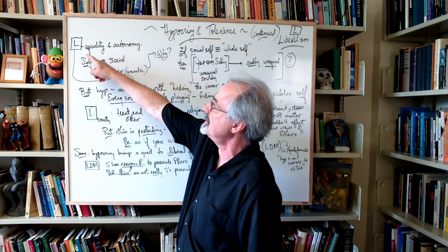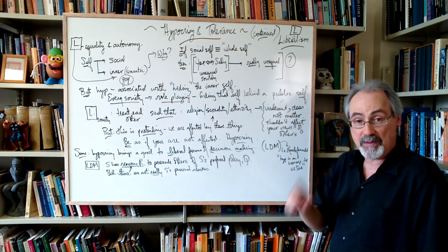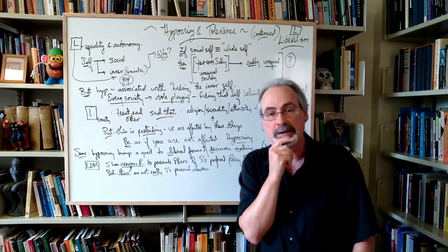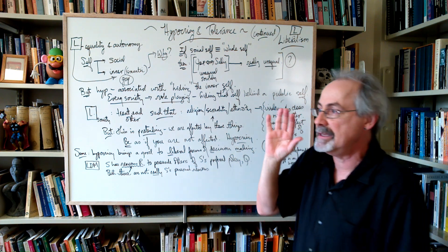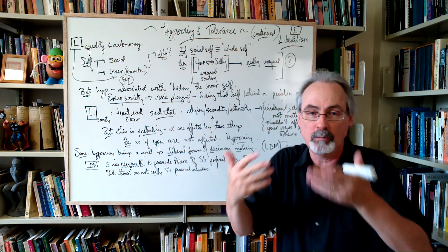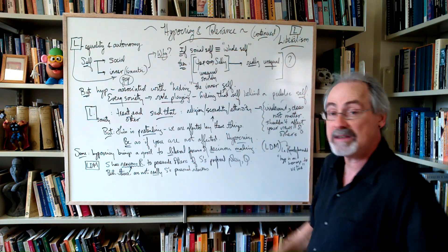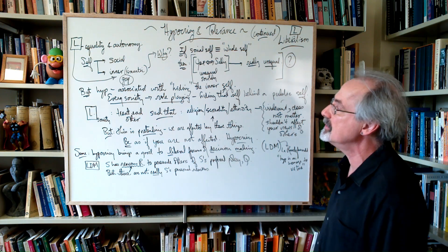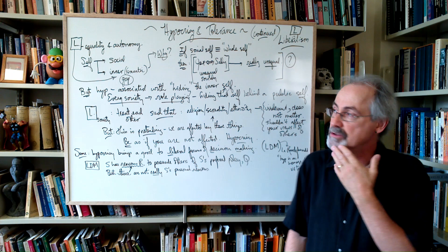Now, liberalism emphasizes equality and autonomy. One of the things that's important about liberalism is its notion of a self. What types of individuals are populating society, a liberal society? What does liberalism assume about those individuals? Well, there's two ways you can understand, at least, the notion of a self.